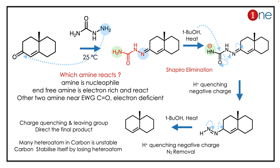The Shapiro elimination occurs. N2 is a good leaving group, so what really happens is the molecule is converted into an alkene — it starts with the alcohol equivalent, and finally you have the alkene. So, starting from an alpha-beta unsaturated ketone, you are converted into an alkene. The key concept here is Shapiro elimination, which converts an alpha-beta unsaturated carbonyl into an alkene.